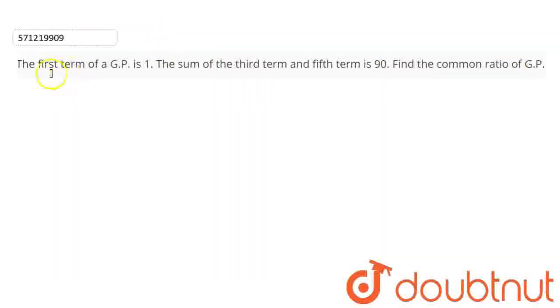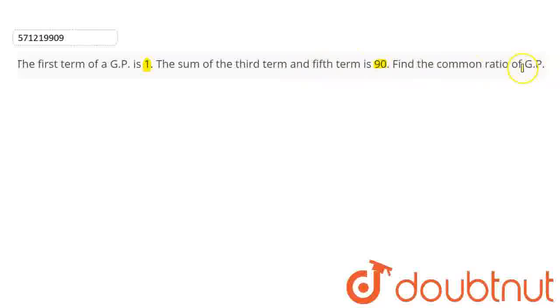Here we have been given the first term of a GP as 1, and the sum of the third term and fifth term of the GP is 90. We have to find the common ratio of the GP.